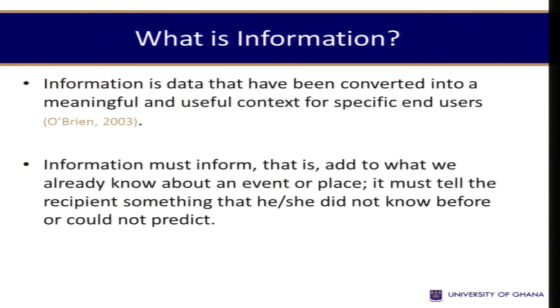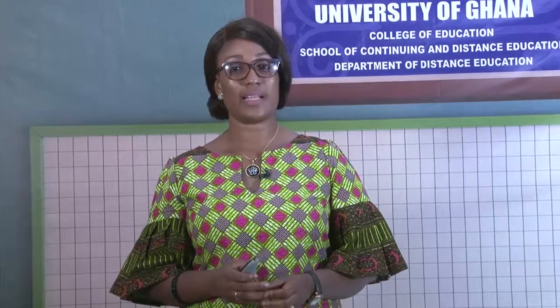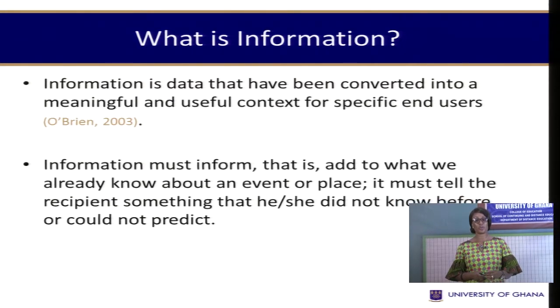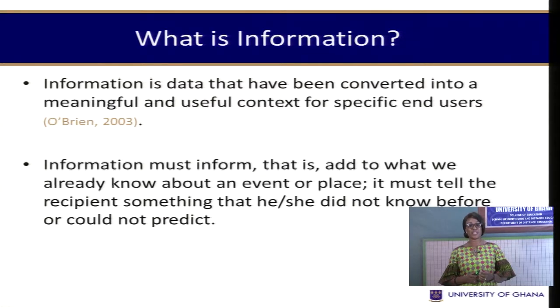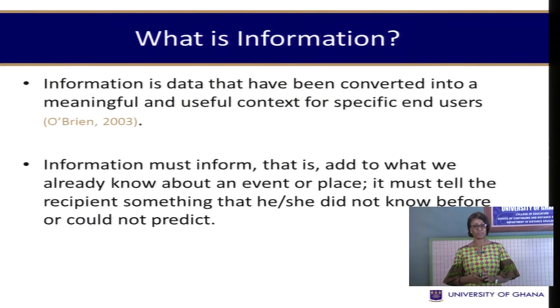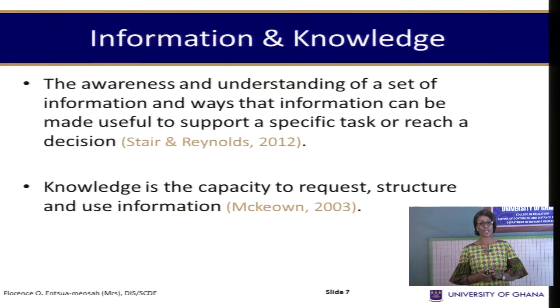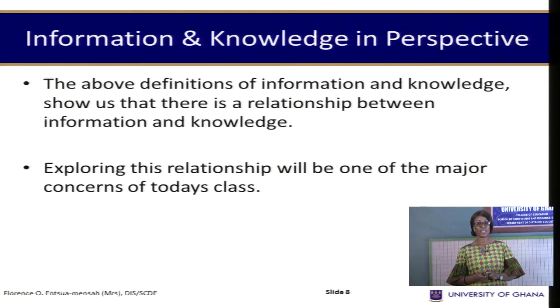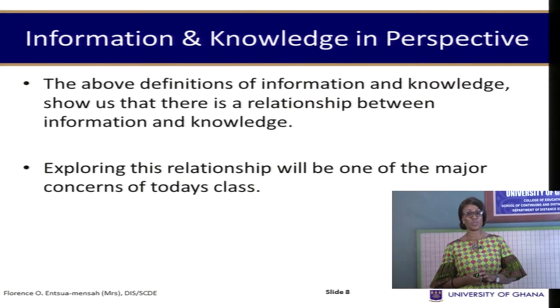What is information? Information is data that has been converted into a meaningful and useful context for a specific end user. Information must inform — that is, to add to what we already know about an event or place. It must tell the recipient something he or she did not know before and could not predict. The awareness and understanding of a set of information and ways that information can be made useful to support a specific task or reach a decision is also known as information. Knowledge is the capacity to request, structure, and use information. The definitions of information and knowledge show us that there is a relationship between the two.